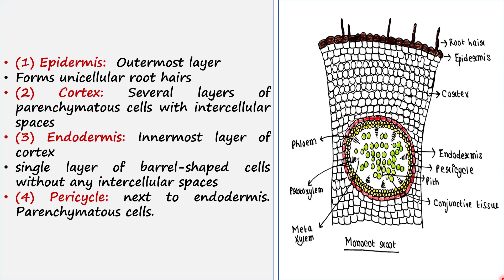When we talk about monocot root anatomy, we will first see some layers. The first layer is the outermost layer, called epidermis. This is the brown layer you can see — it is called epidermis and it forms some root hairs. Each cell of this epidermis layer can form a root hair, but not all cells will. Some cells form root hairs, and each root hair represents a single epidermal cell — that's why these are called unicellular root hairs.